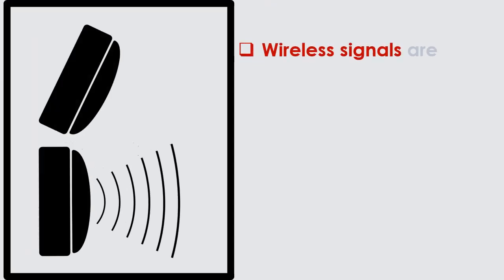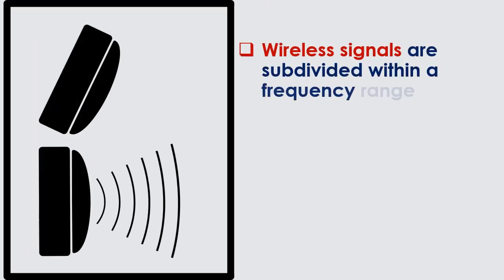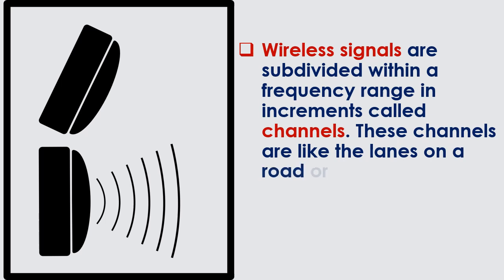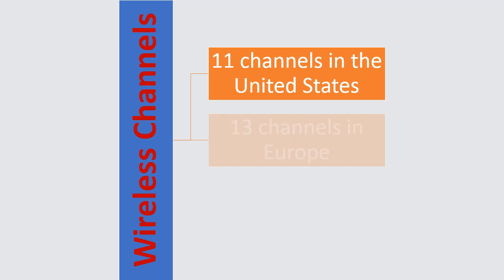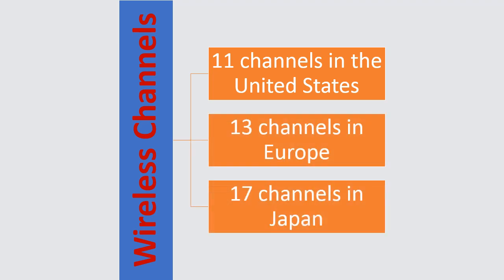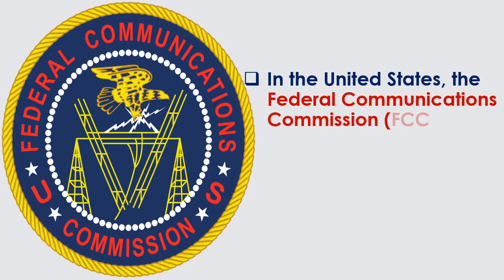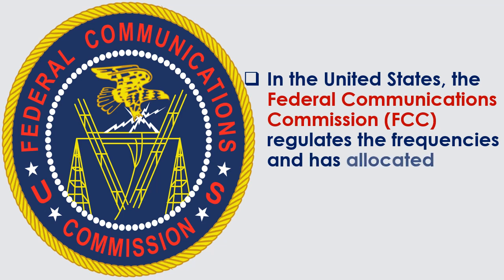Wireless channels. Wireless signals are subdivided within a frequency range in increments called channels. These channels are like the lanes on a road or highway. There are 11 channels in the United States, 13 channels in Europe, and 17 channels in Japan. In the United States, the Federal Communications Commission, FCC, regulates the frequencies and has allocated 11.